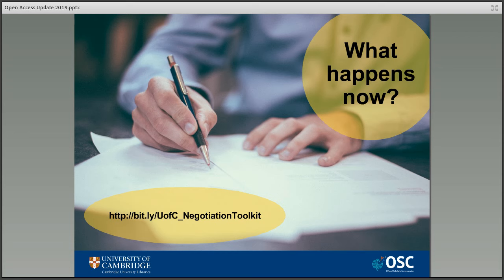One potentially useful outcome for the rest of us is that the University of California has made available a negotiation toolkit based on their experiences. This is a really useful resource if you have responsibility for this area or any kind of negotiation, but also if you just want to learn more about the process — and that address is on the screen.